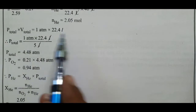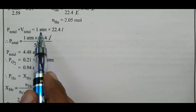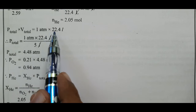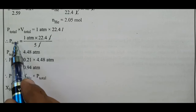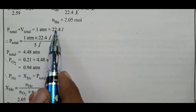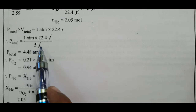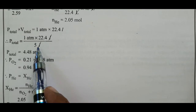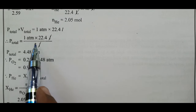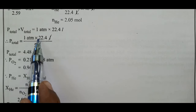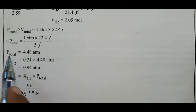Using P1V1 = P2V2: P_total × V_total = P_atm × molar volume (22.4 L). So P_total = (1 atm × 22.4 L) / V_total. The total volume is 5 L. Therefore P_total = 22.4 / 5 = 4.48 atm. This is the total pressure.